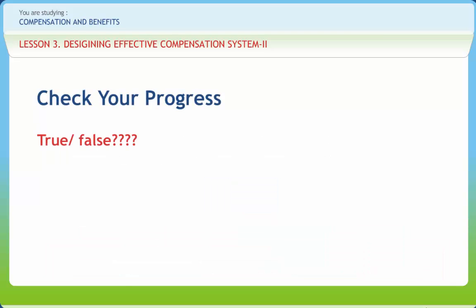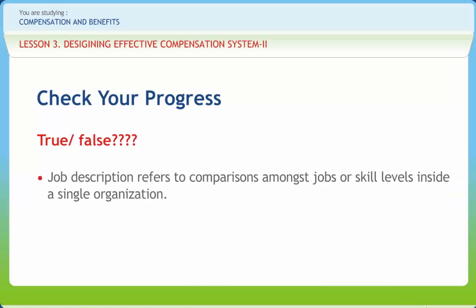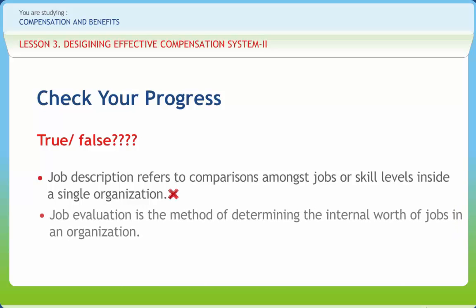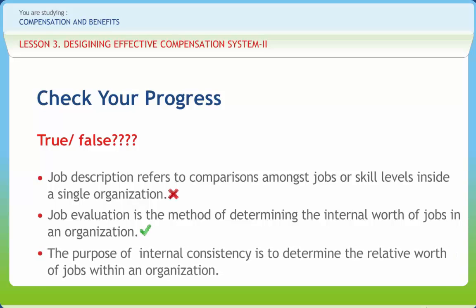Now let us check if we have understood the various concepts discussed in this lesson clearly. Job description refers to comparisons amongst jobs or skill levels inside a single organization. Right or Wrong? Wrong. Job evaluation is the method of determining the internal worth of jobs in an organization. Right or Wrong? Right. The purpose of internal consistency is to determine the relative worth of jobs within an organization. Right or Wrong? Wrong.